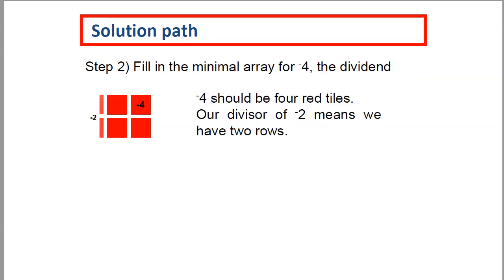Now we'll fill in the minimal array for negative 4, the dividend. Negative 4 should be four red tiles. Our divisor of negative 2 means we have two rows.